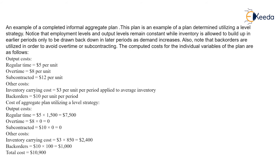To understand this better, we have an example where the plan is determined utilizing a level strategy. Hence the employment levels and output levels remain constant, while inventory is allowed to build up in the earlier periods and drawn back down in later periods as demand increases. Back orders are utilized in order to avoid overtime or subcontracting.